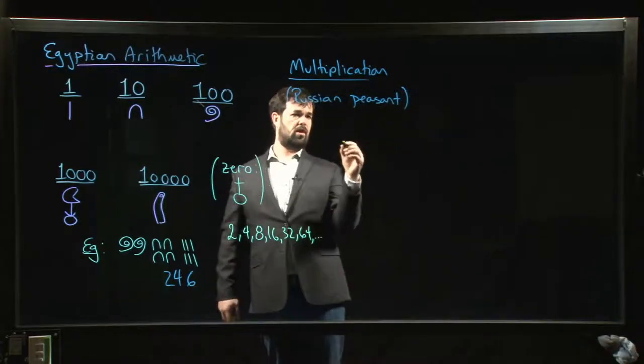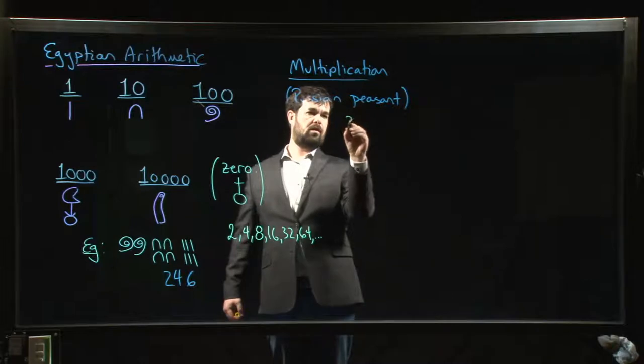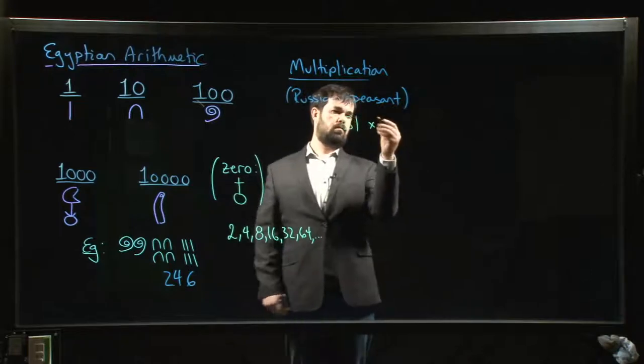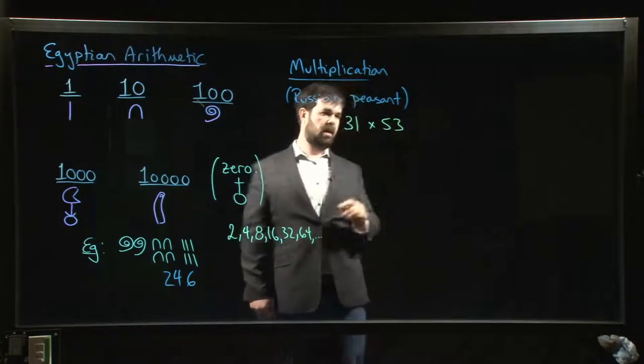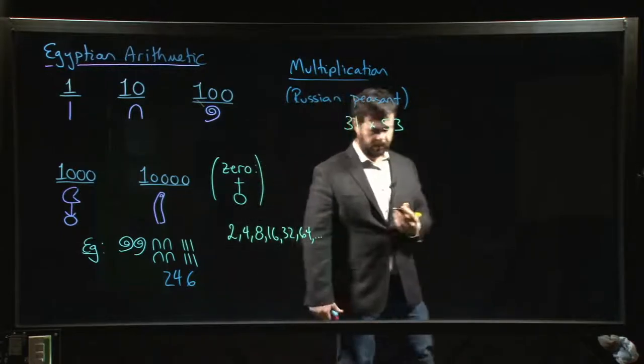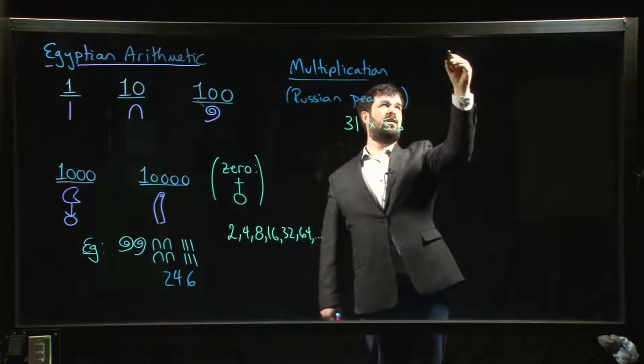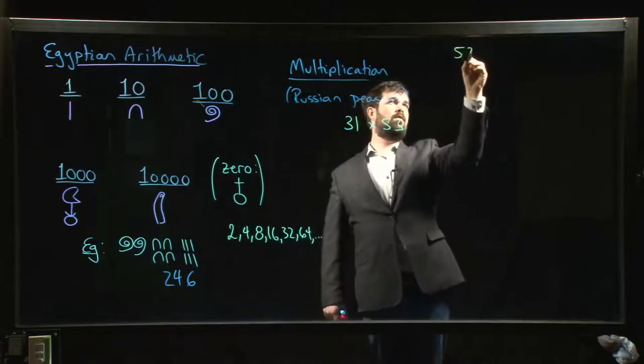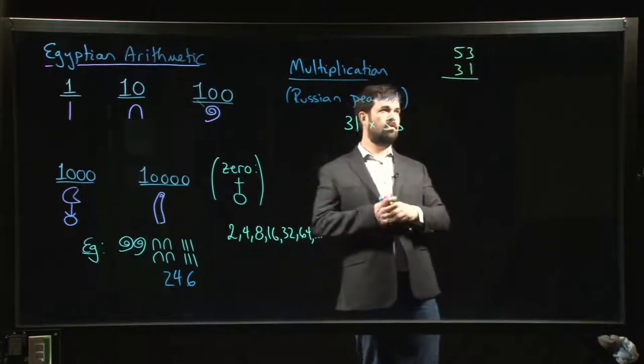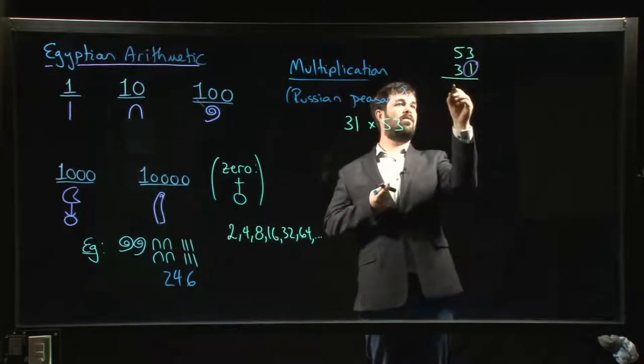How does this Russian peasant method work? I'm just going to do an example. Let's say I want to do 31 times 53. Now we know how we would do this the way I learned to do it in elementary school. There was this standard method where you would write down your numbers, 53 and 31.